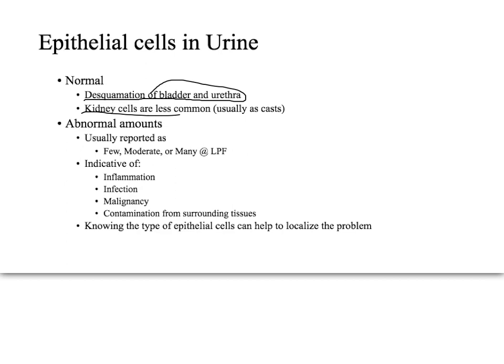When kidney cells desquamate, they typically form casts, so renal epithelial cells are seen less often on urinalysis but are not impossible. Abnormal epithelial results are usually reported as few, moderate, or many. In our case it was moderate at low power focus, and this is typically indicative of inflammation, infection, or malignancy — or contamination from surrounding tissues such as the tip of the penis.